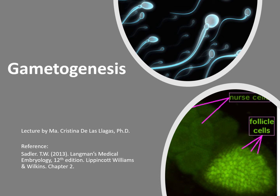During the fourth week, these cells begin to migrate from the yolk sac toward the developing gonads, where they arrive by the end of the fifth week. The process by which gametes are formed is called gametogenesis. In this lecture video, we begin our discussion with the development of the female gametes called oogenesis, then we will discuss how the male gametes were formed during spermatogenesis.